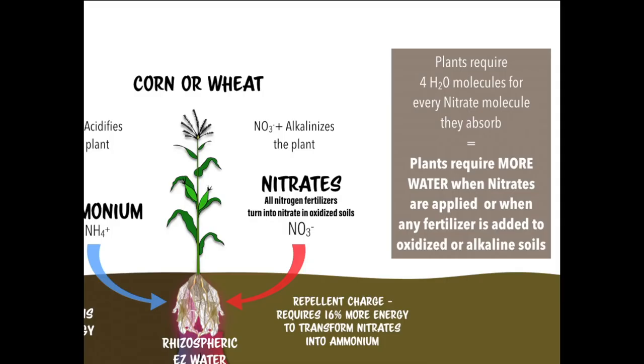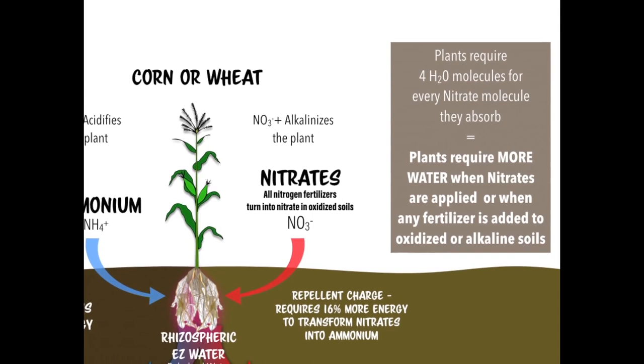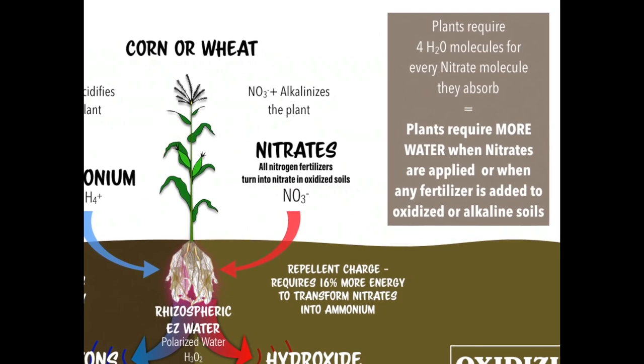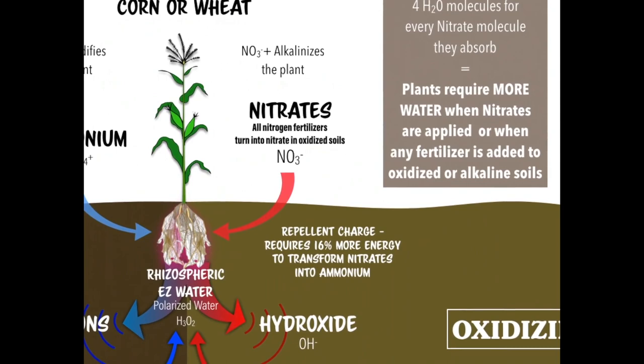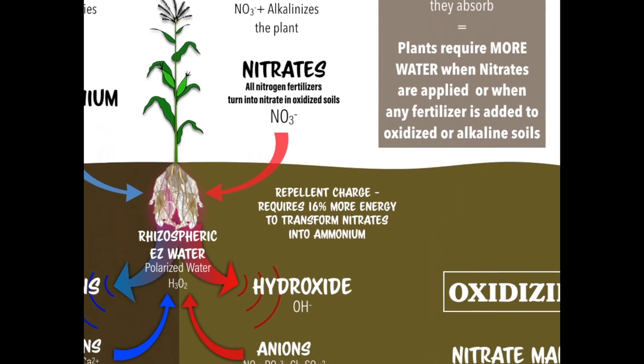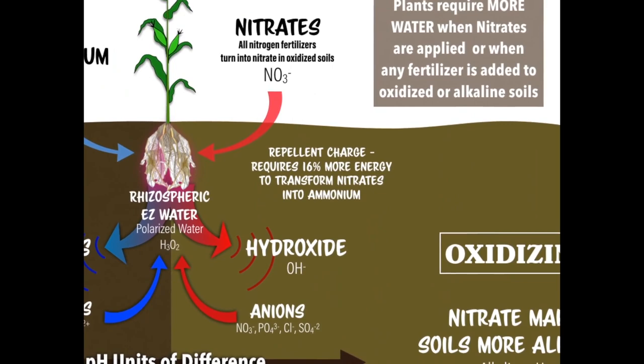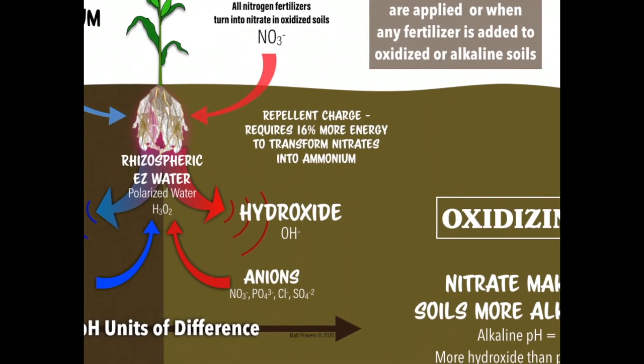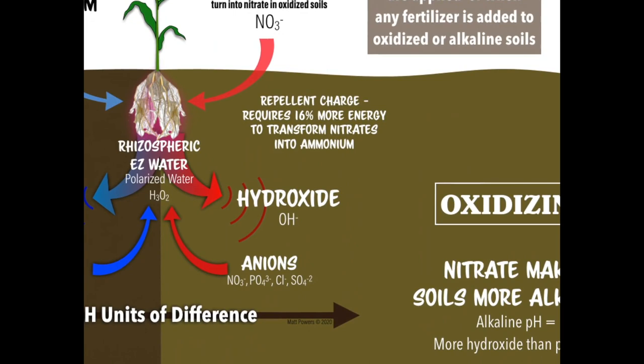The next form is nitrate — NO3 negative. There's an O, not an H, so it's oxidized and it's negative. You're already on the alkaline and oxidized side. When you see NO3 negative, you know it's on the anion side. The plant needs to release hydroxide to reach it — that's oxidizing and alkalinizing.